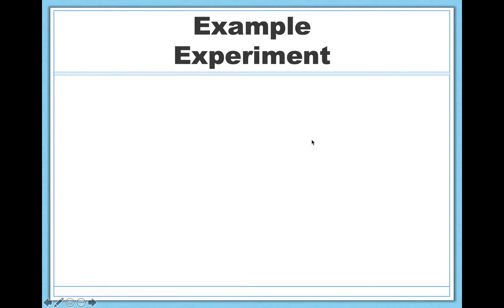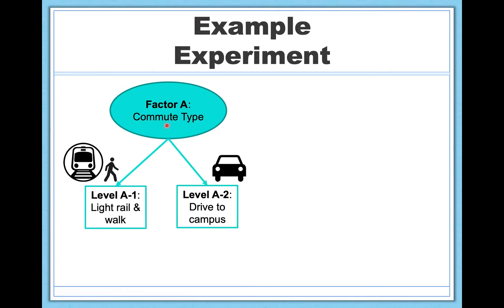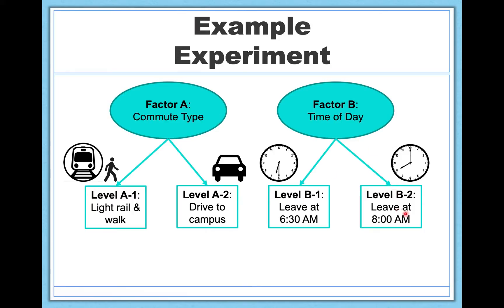Let's look at the structure of this study. I have two different factors. The first is commute type with two levels: A1 — taking the light rail and walking — and A2 — driving to campus. The second factor is the time of day I plan on leaving: either 6:30 a.m. or 8 a.m. This is a factorial analysis of variance because we have two factors, each with two levels. A one-way ANOVA can only look at one factor; factorial ANOVAs can look at as many factors as you want. I could even add a factor C — whether results change depending on the day of the week.